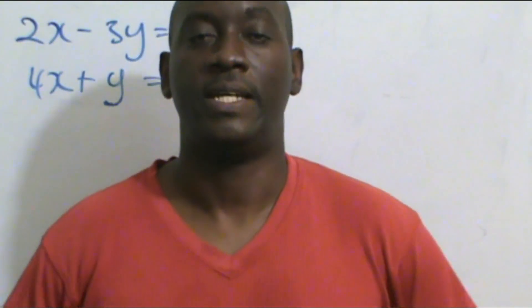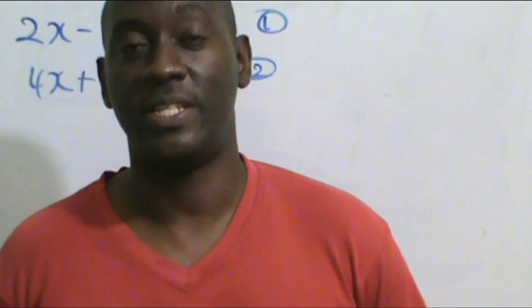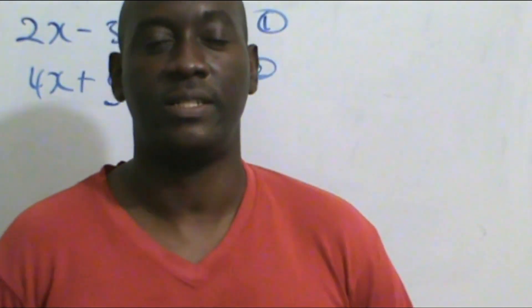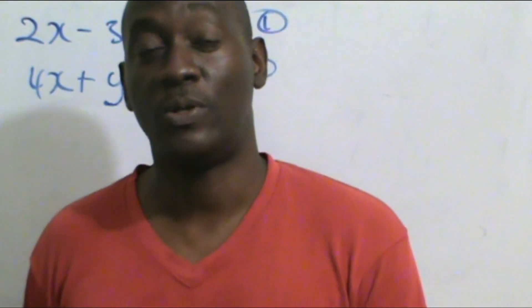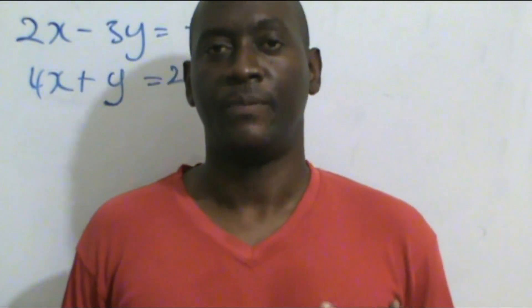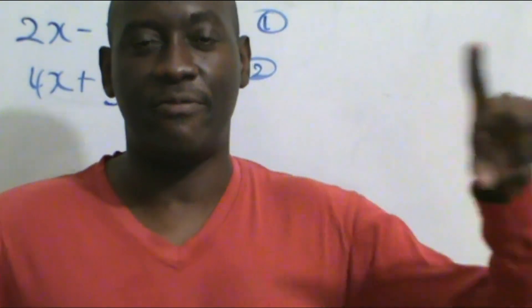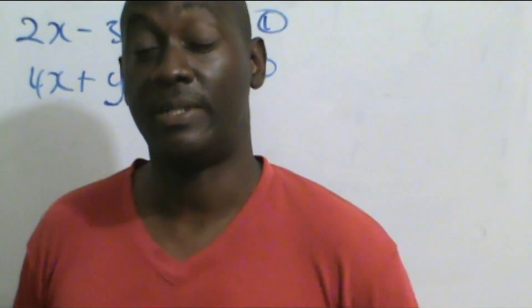In this fourth video in our series on the 2x2 matrix, we're going to deal with using the matrix method to solve simultaneous equations. Just a brief recap: in the first video we looked at the determinant of a 2x2 matrix; in the second video we looked at the special case where the determinant was equal to 0, which is the singular matrix; and in the third video we looked at finding the inverse of a 2x2 matrix. This is the video where everything comes together.